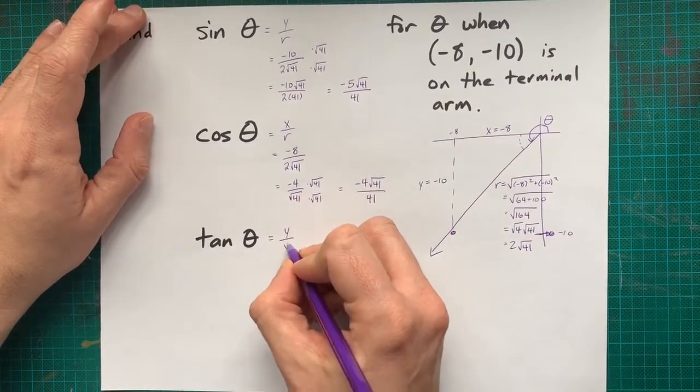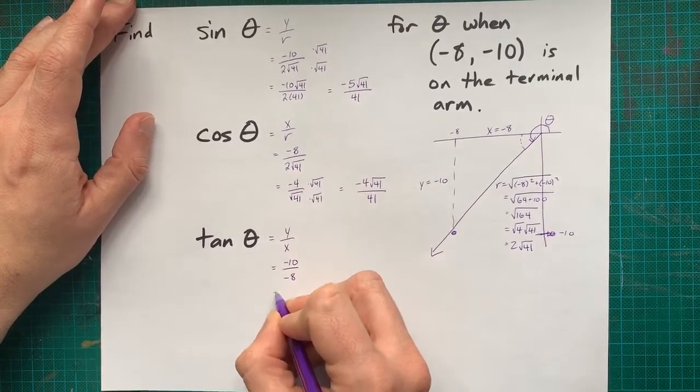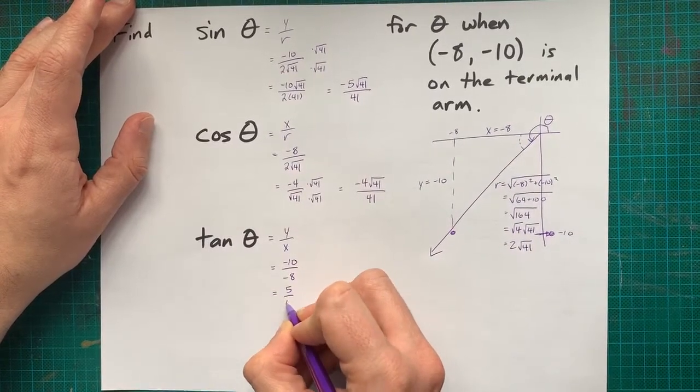Lastly, tan is y over x. Now, these are whole numbers. Negative 10 over negative 8 actually gives me positive value for tan.